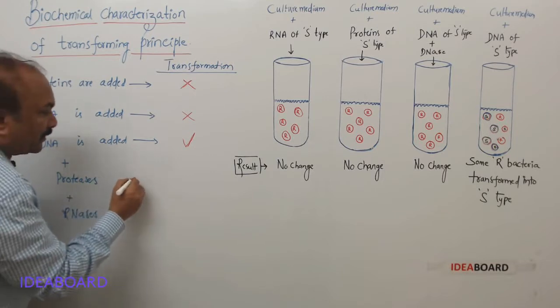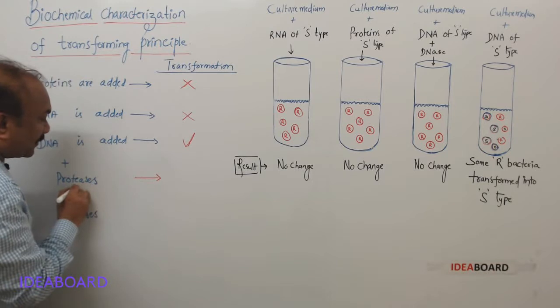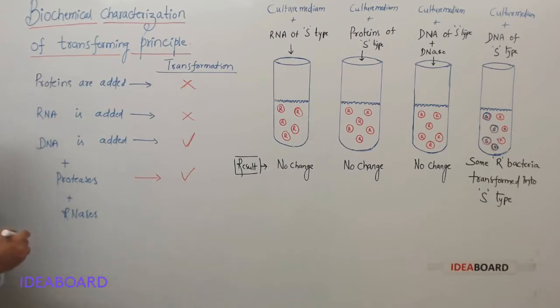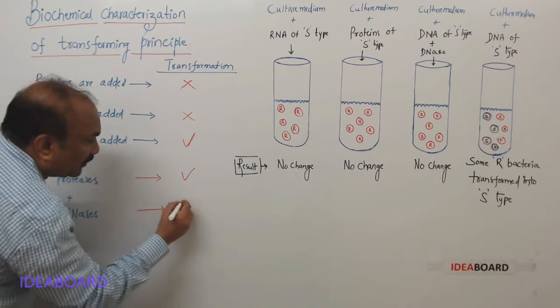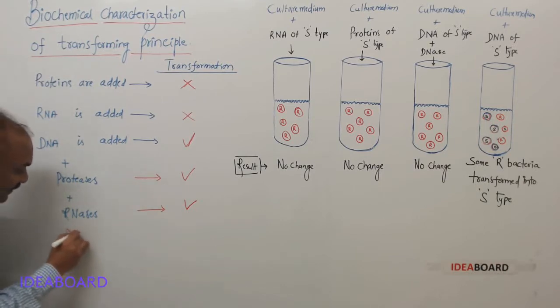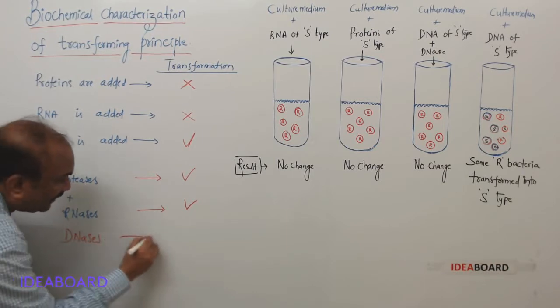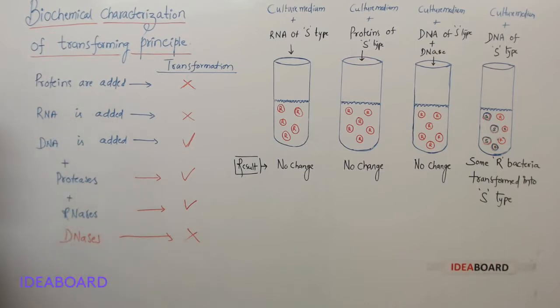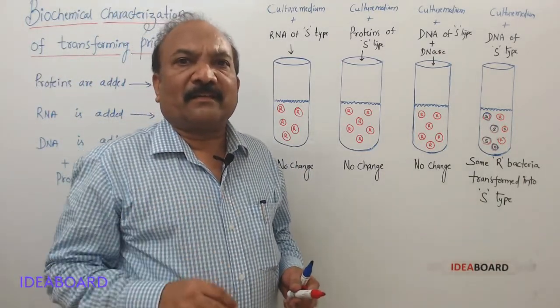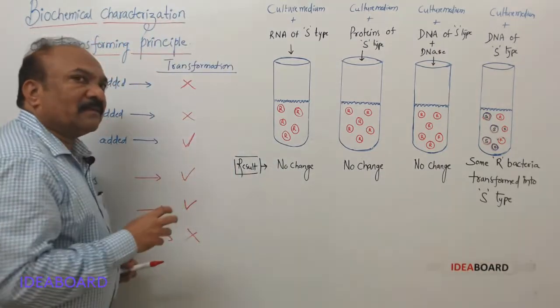Whether this transformation continued or not, when the enzymes proteases are added, it continued. When RNases are added, the transformation continued. But when DNases are added, the transformation was stopped. From this we can say that, or we can confirm that, the DNA is the genetic material. The transforming principle is DNA.